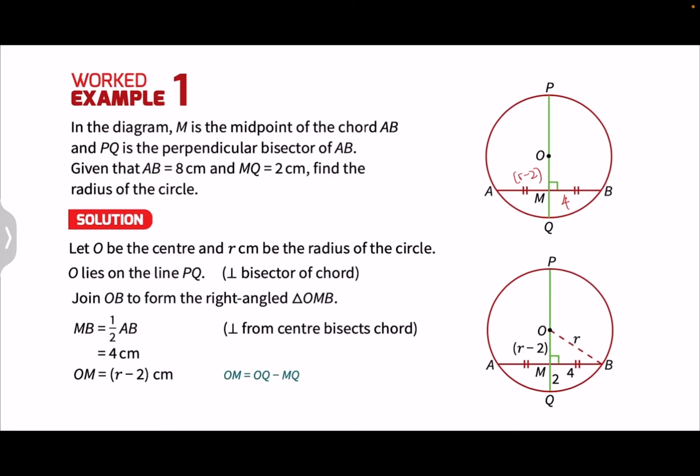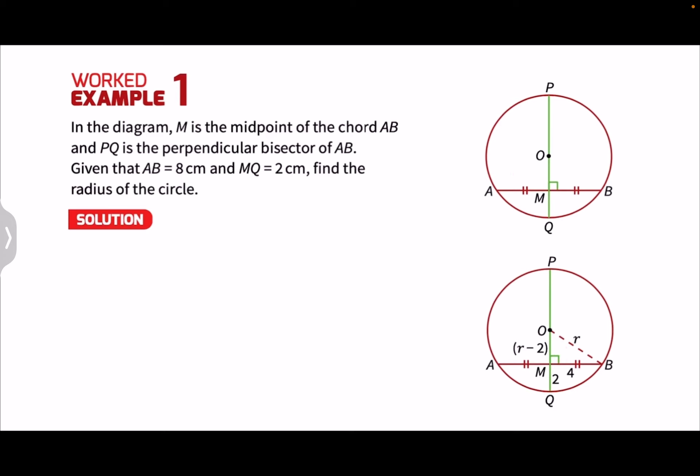We can now apply the Pythagoras theorem to form an equation in terms of R. So the side OB, which is opposite the right angle, will be the hypotenuse. So OB square will equal OM square plus MB square. So this is the Pythagoras theorem.